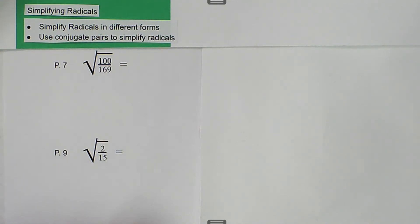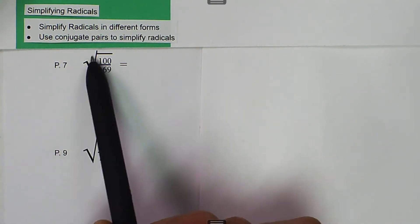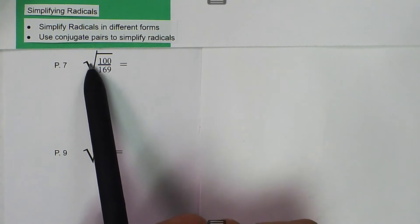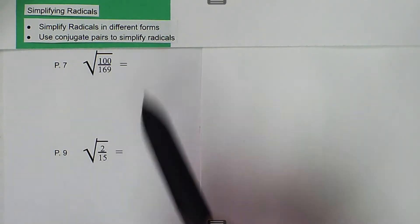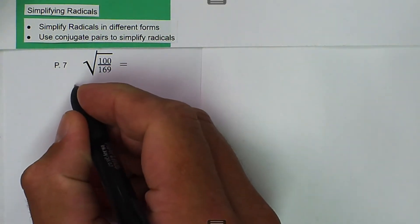We are talking about simplifying radicals, and we want to simplify radicals in different forms. Here we have the square root of 100 divided by 169, and what we can do is split this radical to be in the numerator and the denominator.